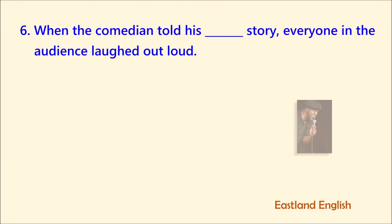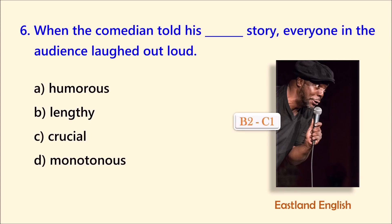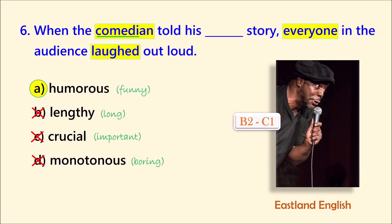Number six. When the comedian told his blank story, everyone in the audience laughed out loud. A. Humorous. B. Lengthy. C. Crucial. D. Monotonous. Let's look at the word comedian first. The root word for comedian is comedy. A comedian's job is to get people to laugh. A comedian wouldn't likely tell a monotonous story — a monotonous story wouldn't entertain people. Although lengthy could possibly be used, lengthy only means long. Crucial is out of context. Humorous is the best choice for this sentence. When the comedian told his humorous story, everyone in the audience laughed out loud.